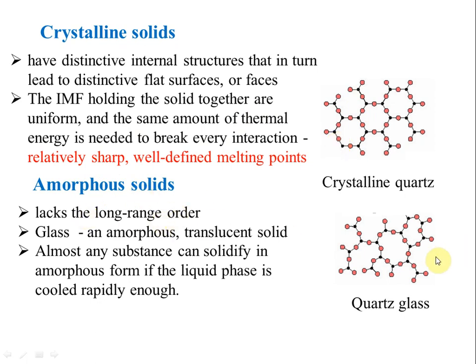Amorphous solids lack long-range order. Glass is a perfect example — not all amorphous solids are glasses, but all glasses are amorphous solids; they are amorphous and translucent. Most polymers are also amorphous solids. Any substance can solidify in either amorphous or crystalline form depending on how it is cooled. If cooled very fast it forms a disordered structure. For example, SiO2 forms quartz glass in its amorphous form and crystalline quartz in its crystalline form.